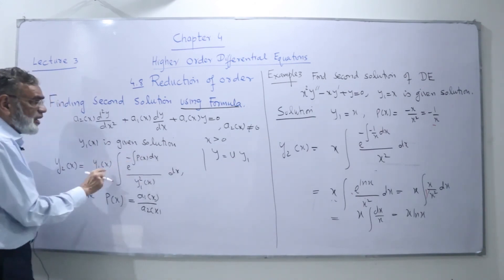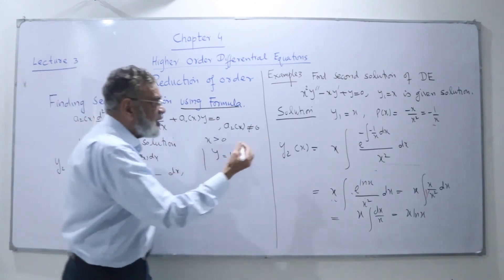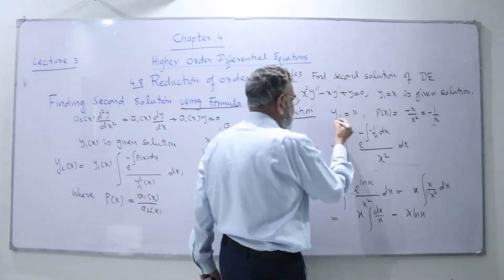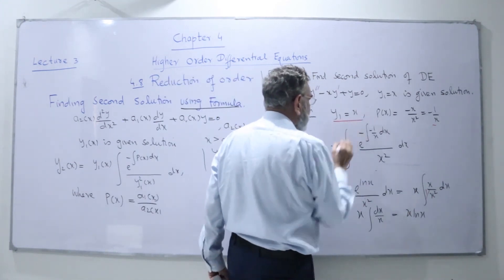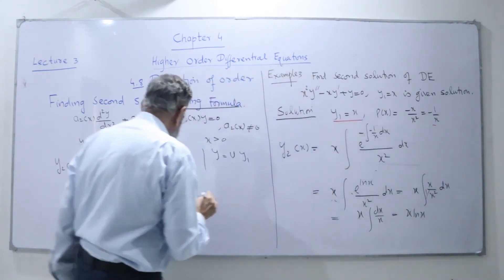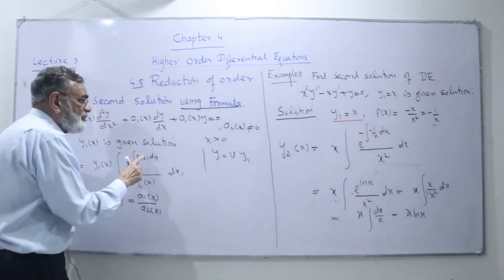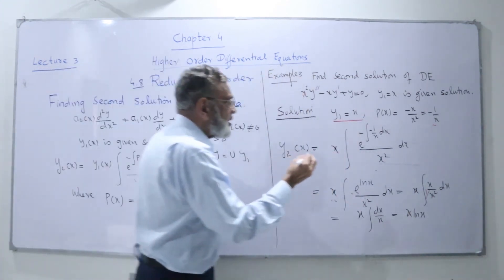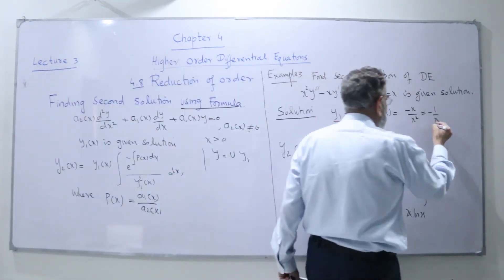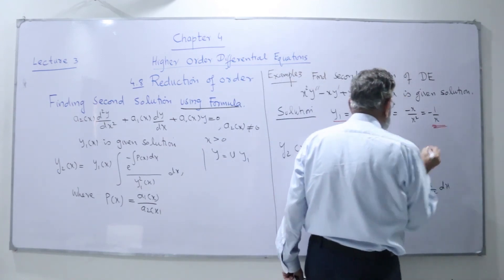We have the value of y1: y1 is equal to x. Then we need the value of p(x), where p(x) is equal to minus 1 upon x.